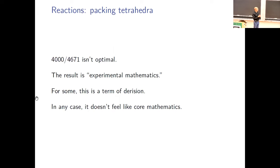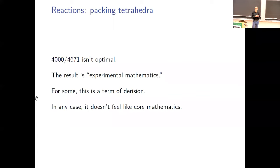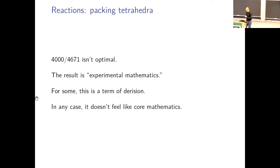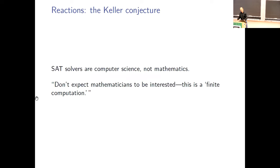What we love about John Conway is that you can think about any problem, just think about it and come up with something to say — there's a fearless creativity in these results that is really impressive. But it doesn't feel like core mathematics. That's really the point: these aren't judgments of the value of the results, but whether they fit the conceptual mold. The Keller conjecture is similarly easy to dismiss — it uses SAT solvers, and a colleague told me 'Don't expect mathematicians to be interested. This is a finite computation.' The idea is: if the final open question is whether it's true in seven dimensions, the mathematician's answer is that you just run your computer long enough and it'll tell you. But why bother? What are we going to learn?